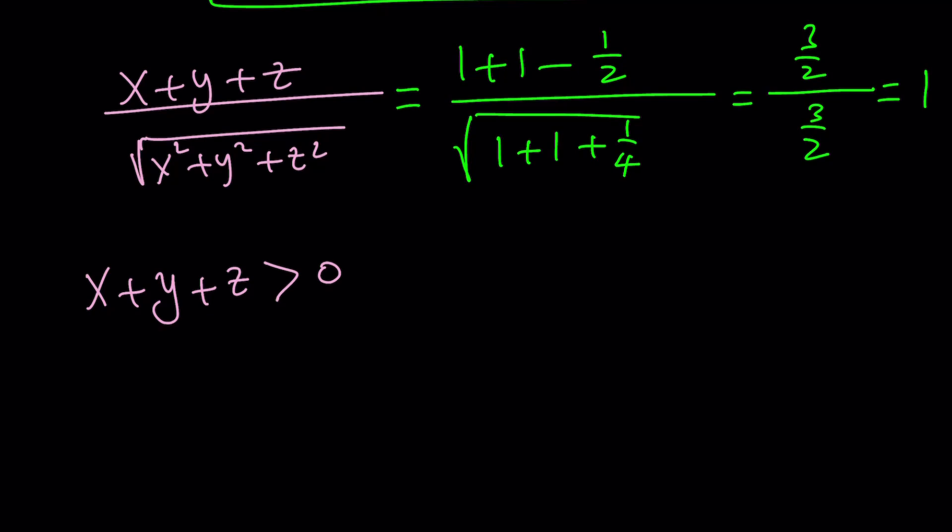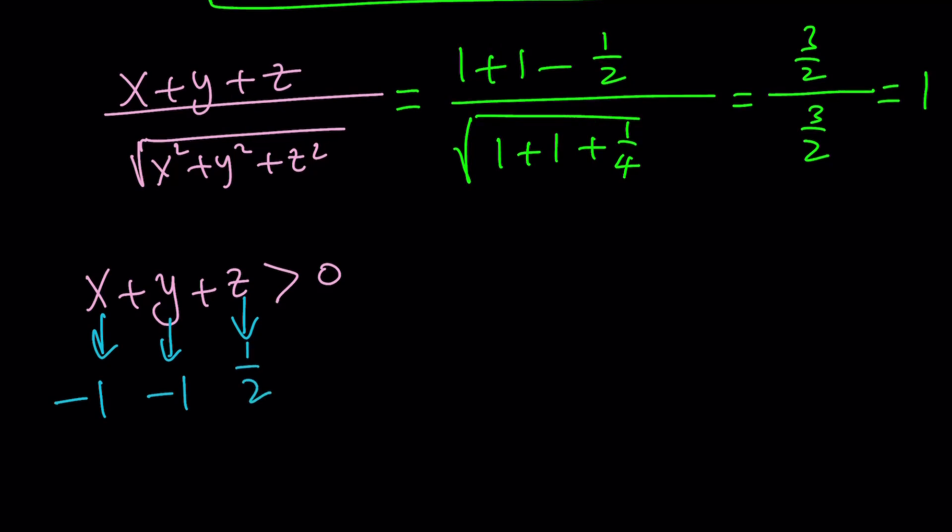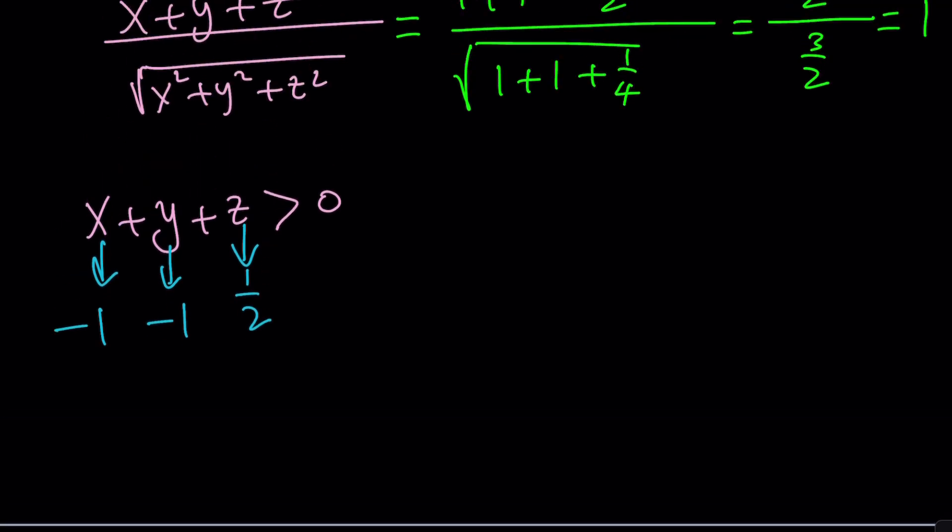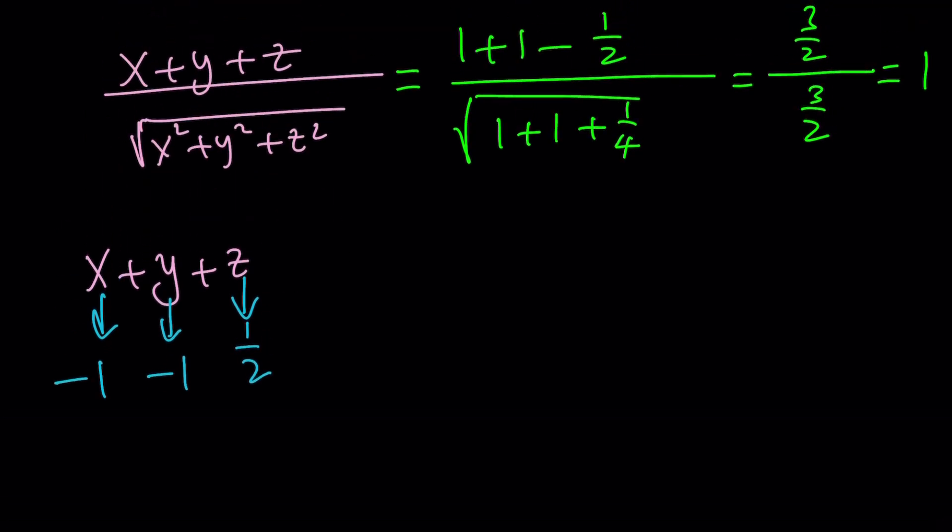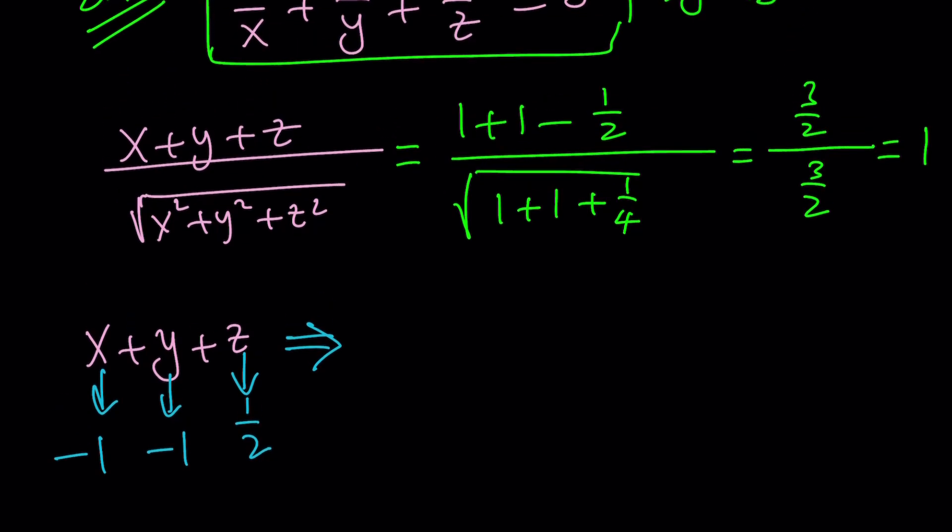And the answer is yes. For example, if you pick negative 1 for x and negative 1 for y, then automatically, you're going to get positive 1 half for z. And their sum is going to be negative. So the sum doesn't have to be positive all the time. Let's find out what happens with these values. We're going to plug it in: negative 1 minus 1 plus 1 half divided by the square root of 1 plus 1 plus 1 fourth. The denominator is not going to change.